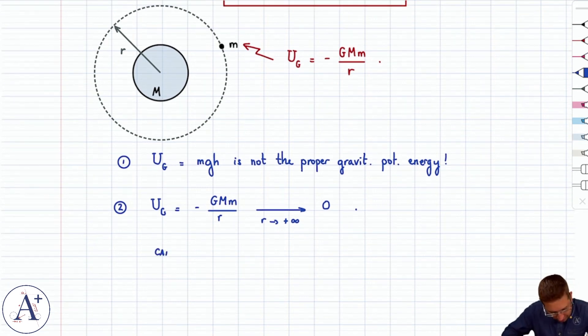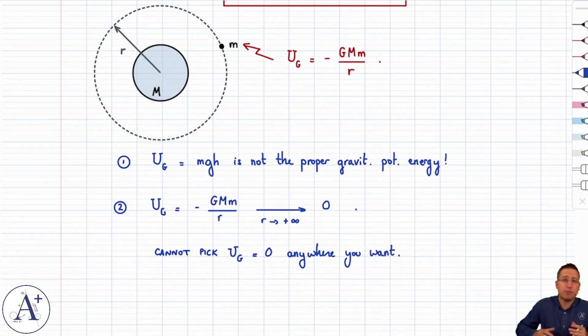So the consequence is that you cannot pick U sub g equals zero anywhere you want. Now, it has to be the case that you can only claim U sub g is zero if r is infinity, which you could argue never happens mathematically.